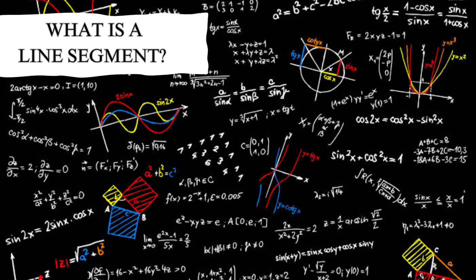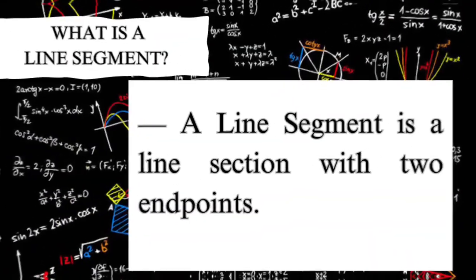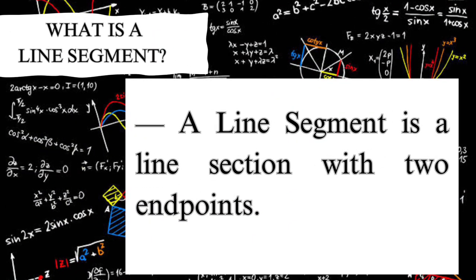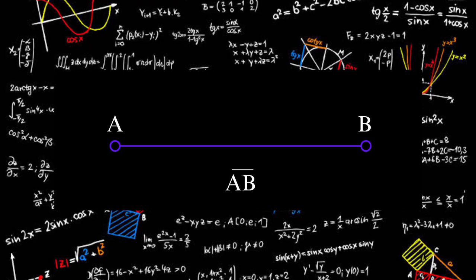Let's first identify the line segment. What is a line segment? A line segment is a line section with two endpoints. It is specifically a segment of straight line with two endpoints. Here is an example of a line segment.